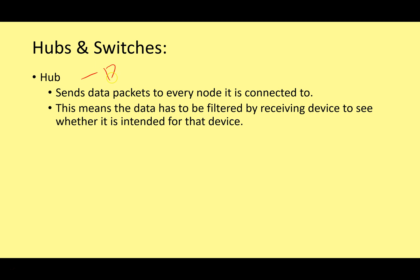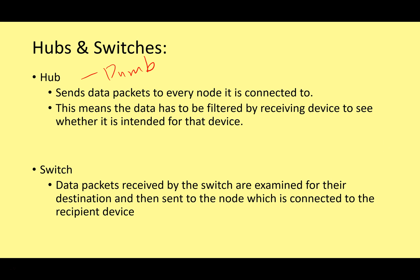Hubs are sometimes referred to as dumb devices - they're not intelligent. They take a packet of data, a set of ones and zeros, and just send it to every computer they're connected to. A switch, however, is smarter. The data packets received by the switch are examined for their destination address - that's the MAC address - and then sent only to the node connected to the recipient device. The switch doesn't send data to every single computer; it sends it only to the one node that requires it.